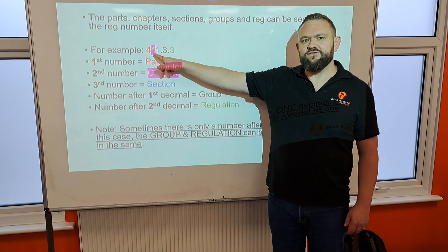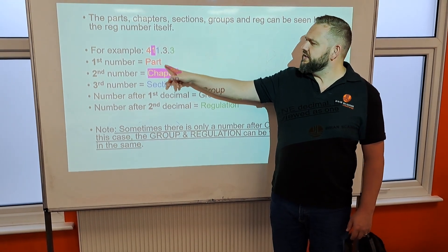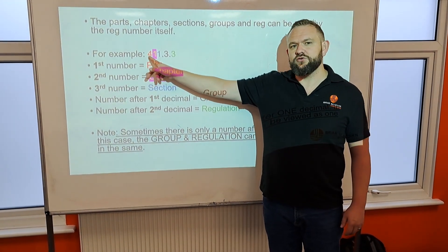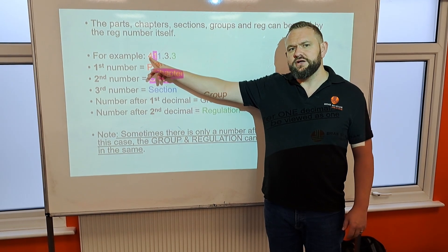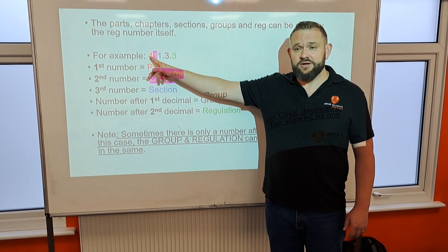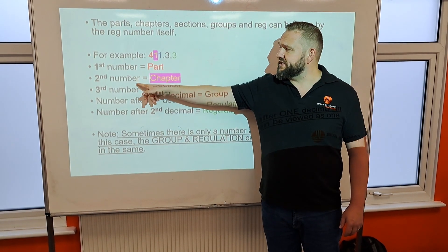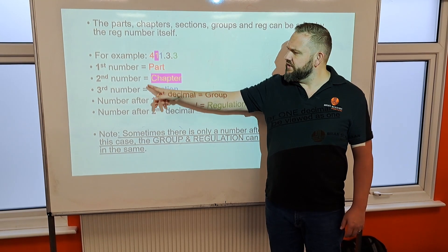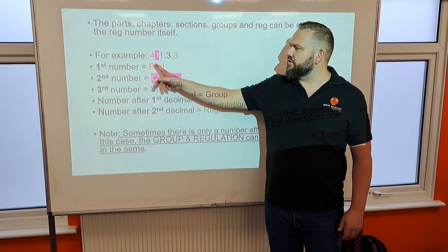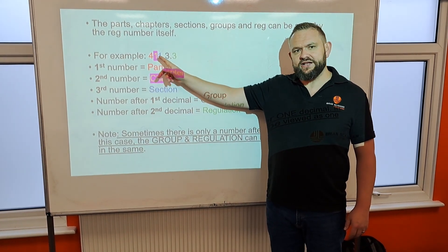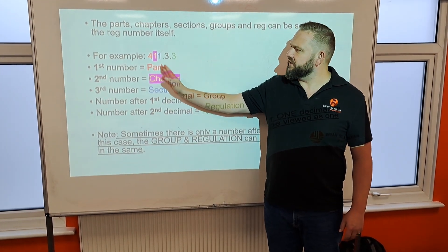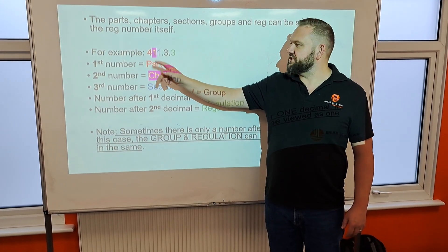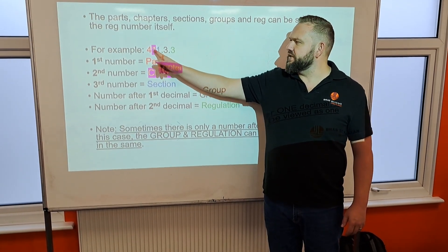...for an example at 411.3.3, the very first number of that regulation will coincide with the part of the book where that regulation can be found. The second number correlates to the chapter within that part. The third number correlates to the section within that chapter. So in this case we're looking at section 411, which is the first section in the first chapter within part four of the book.